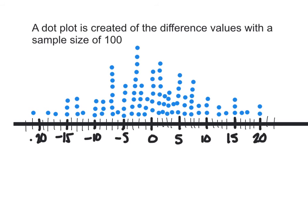So a dot plot is created of the difference values with a sample size of 100. So we retook that scenario, we grouped them 100 times, and we found the difference values. So we took the difference between each group and plotted a chart here of the difference values.